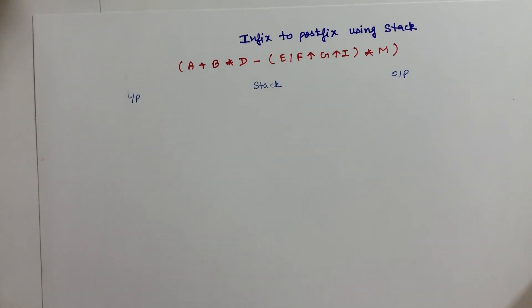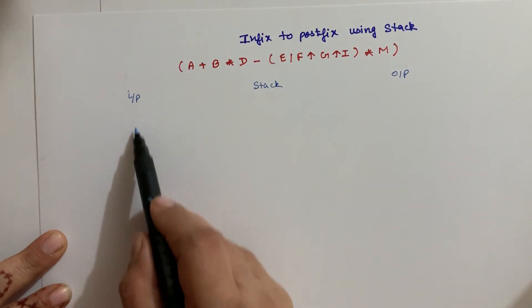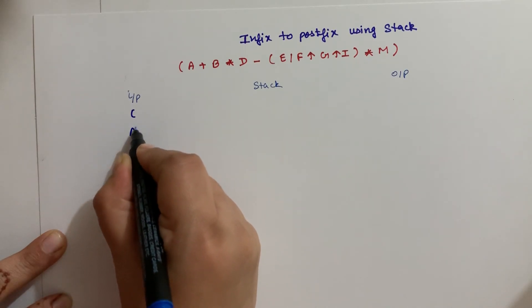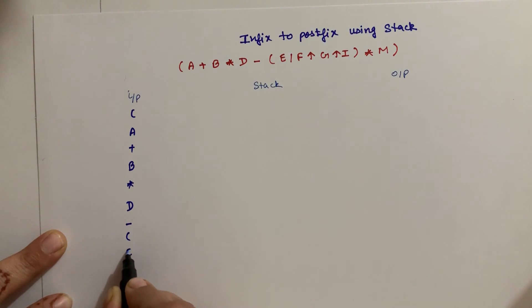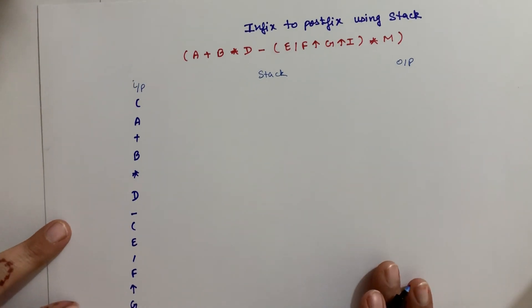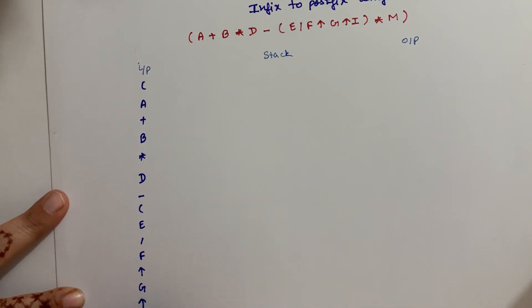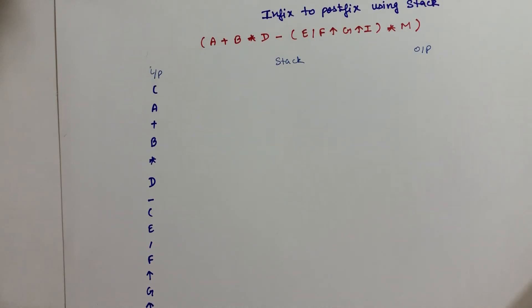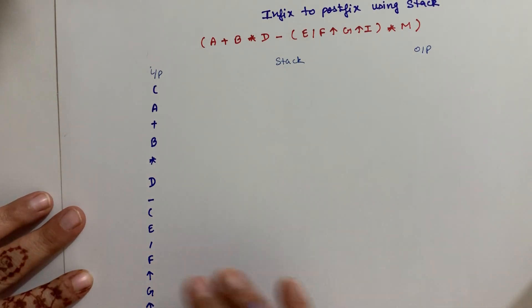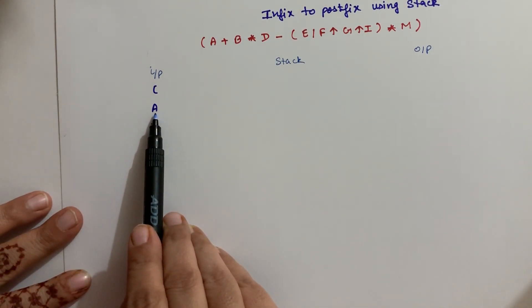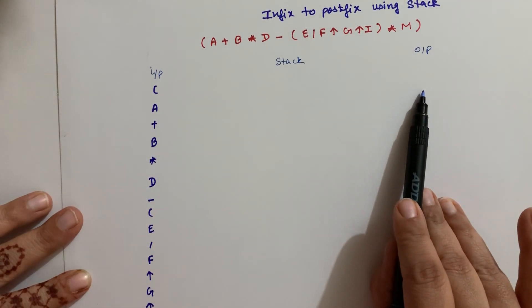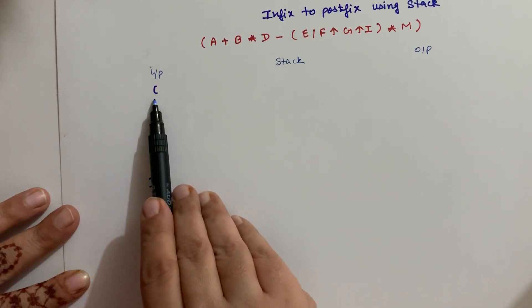Here we have the whole expression in the input: A plus B into D minus E divided by F, then raise to the power G, then raise to the power I. Now whenever we are doing infix to postfix conversion using stack, first of all you should understand that in the stack we have only brackets and operators, and in the output we have the values. So whenever you have an operator, in the stack we have only brackets and operators. Now we have the opening bracket here.